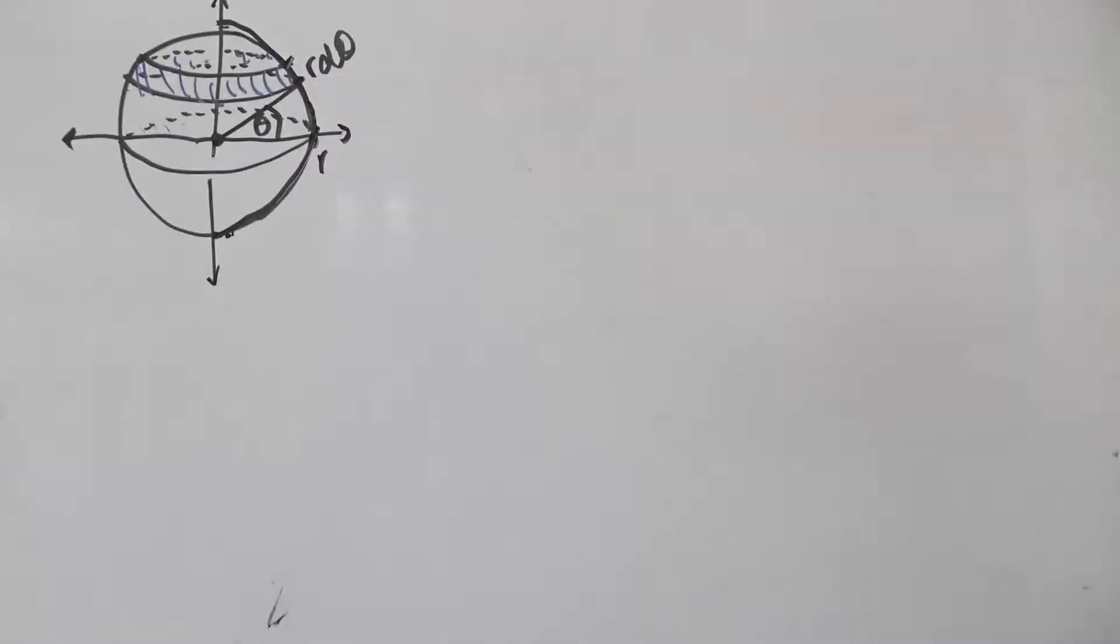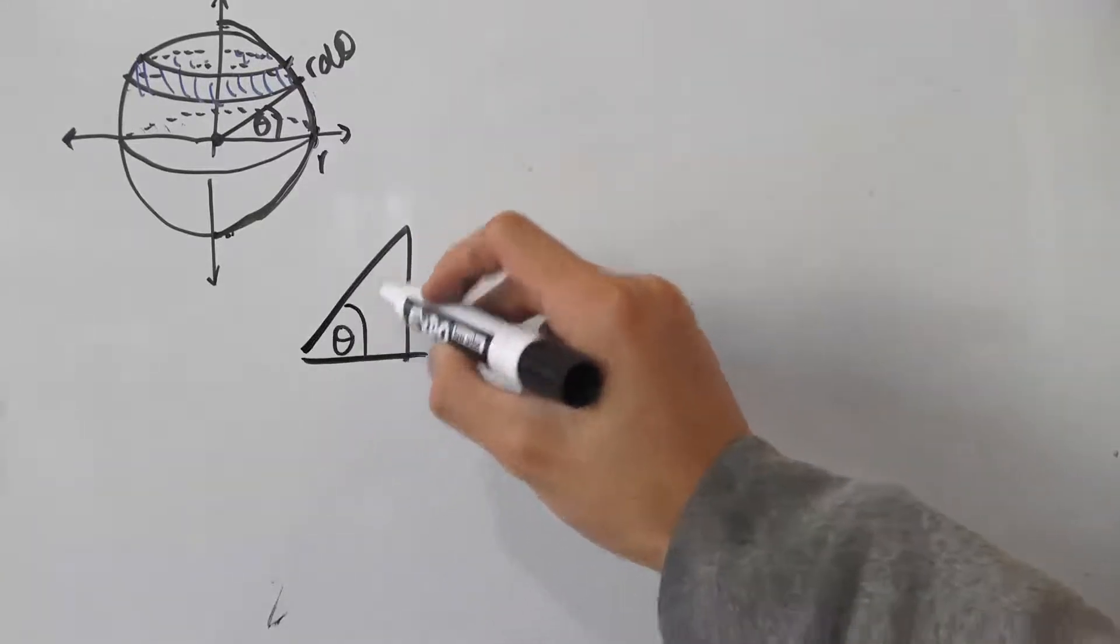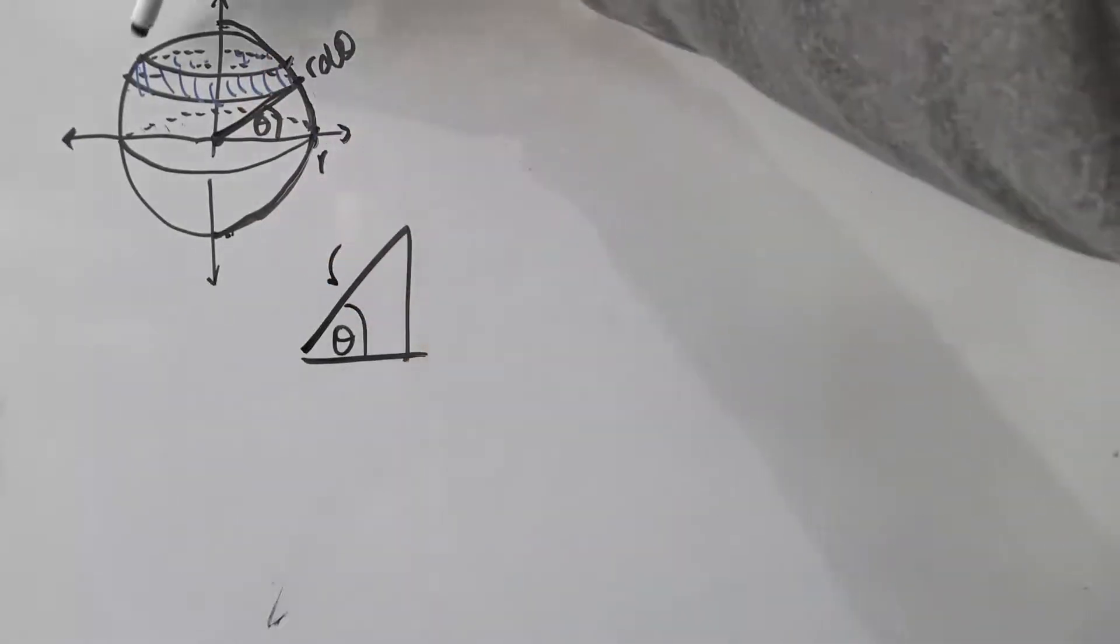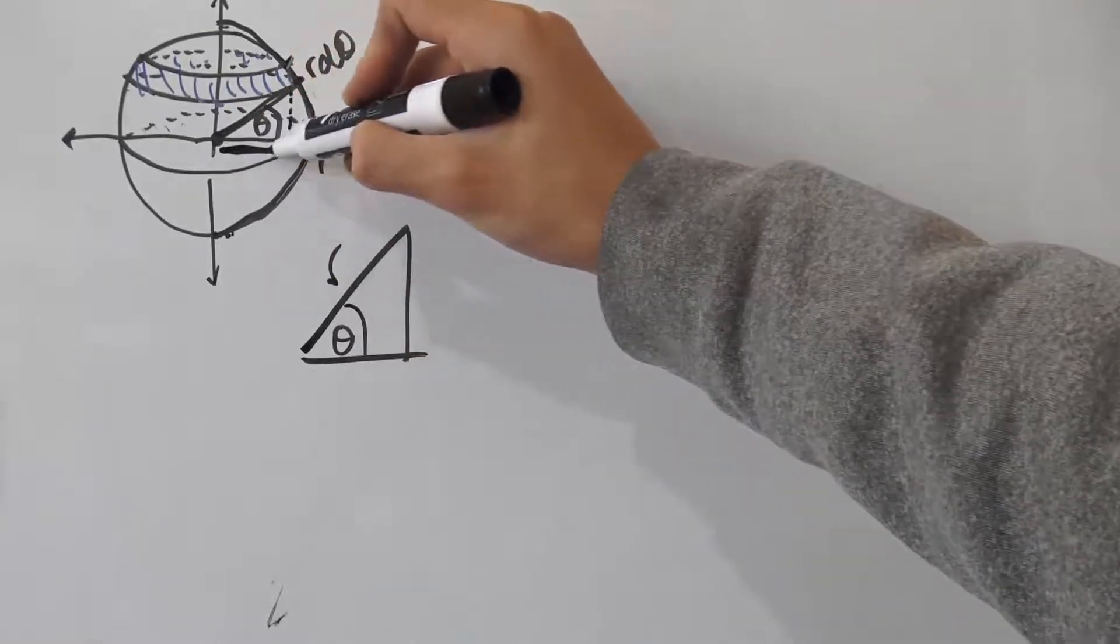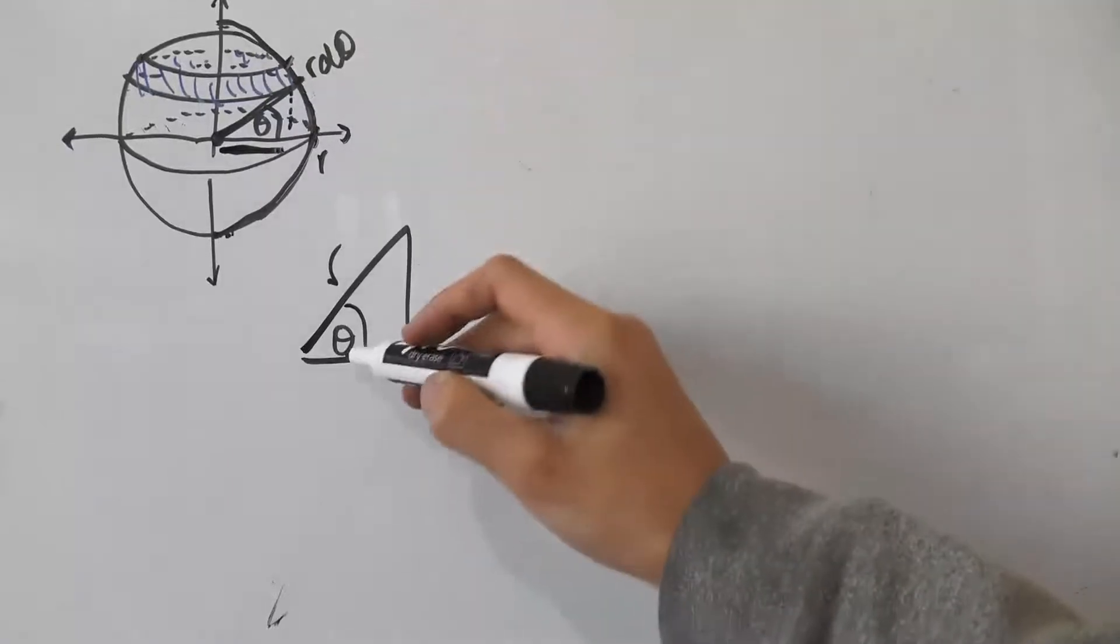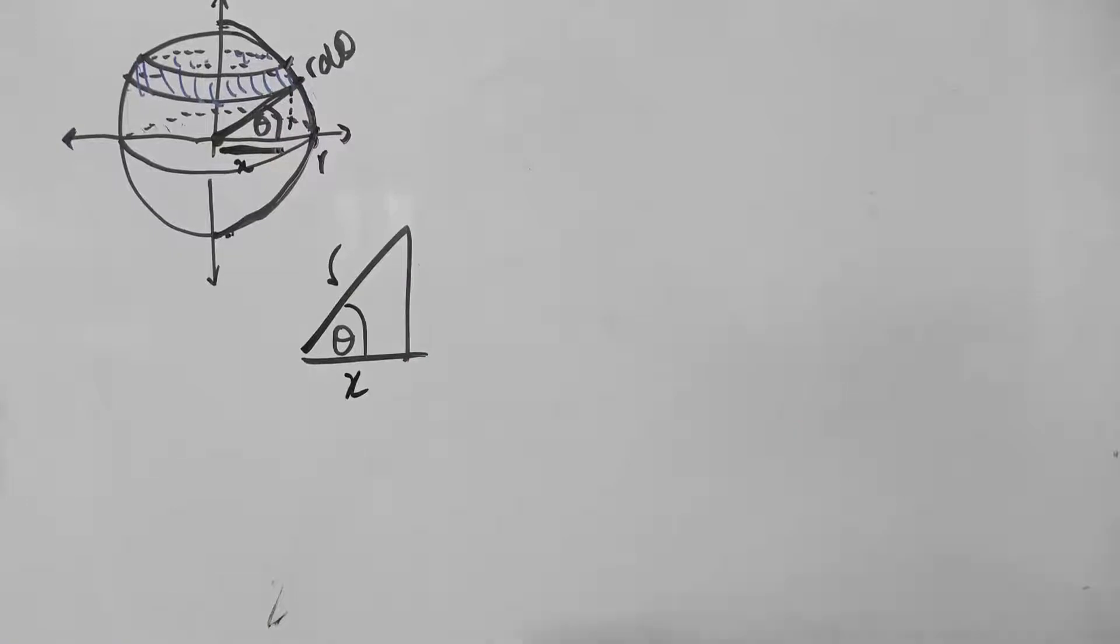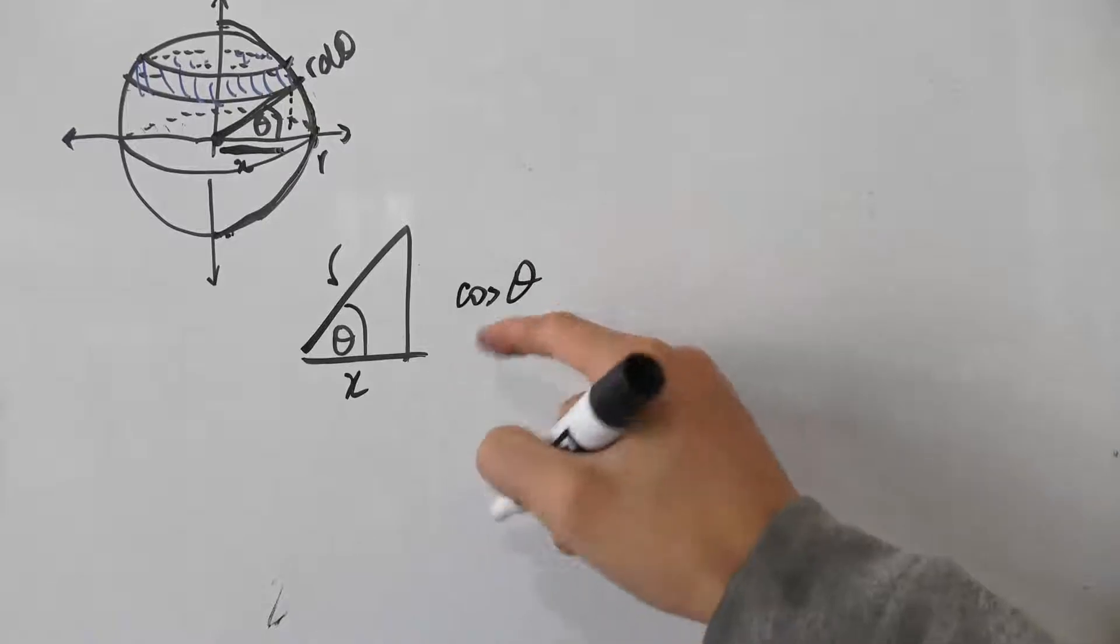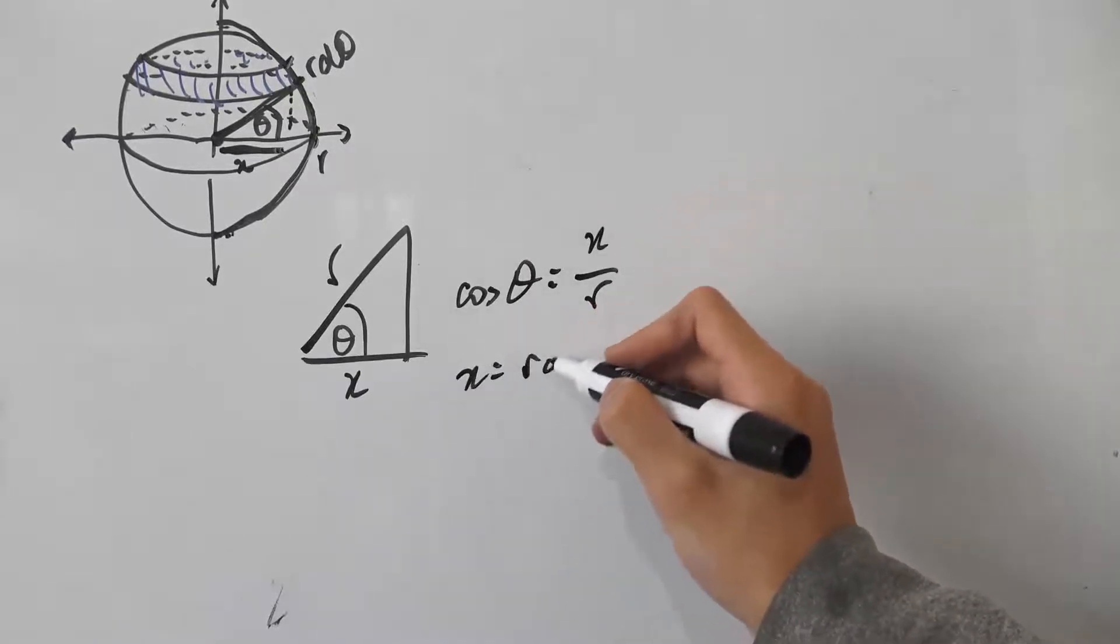Let's redraw this a bit. This was θ. We know the radius of this sphere is r. To find this circumference here, we actually need to find this length here along the x-axis. So if this is θ, let's just call this x. This is really easy to find x in terms of r. We know that cos θ will be equal to x/r. So x is r cos θ.